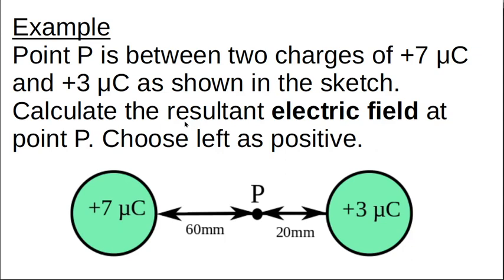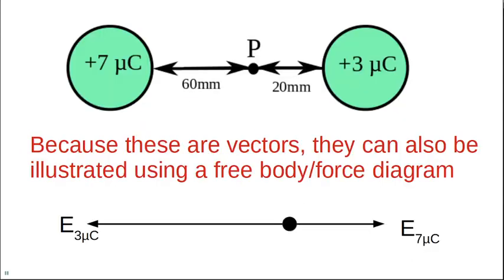Point P is between two charges of 7 microcoulombs and 3 microcoulombs as shown in the sketch. Calculate the resultant electrical field at point P — choose left as positive. Field is the force per unit charge placed at that point, so because it's a unit charge we don't need to worry what P is. We'll use the formula E = kQ/r².